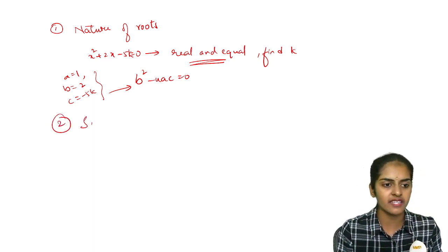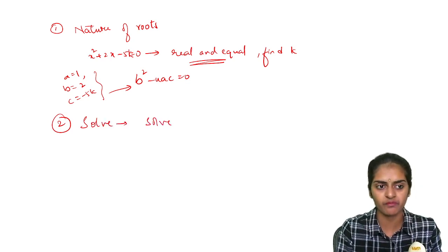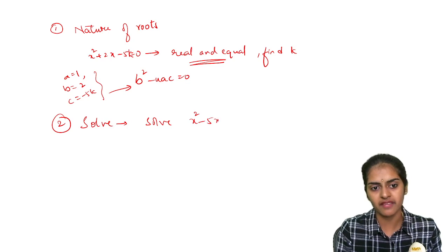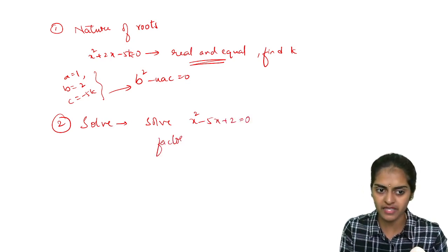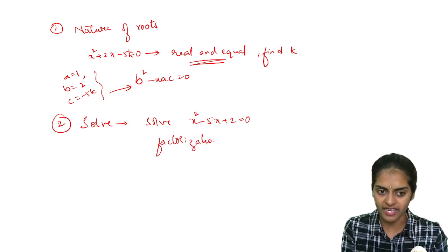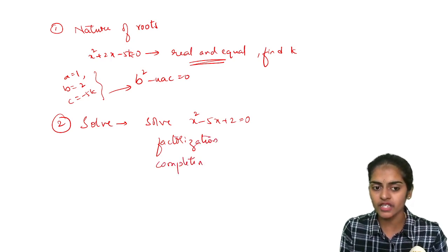The second model is they will ask you to solve the equations. They will ask you to solve x square minus 5x plus 2 equals to 0. So you can solve it using factorization method.